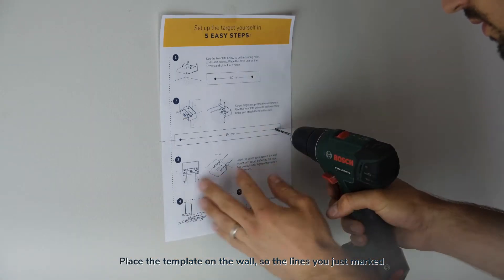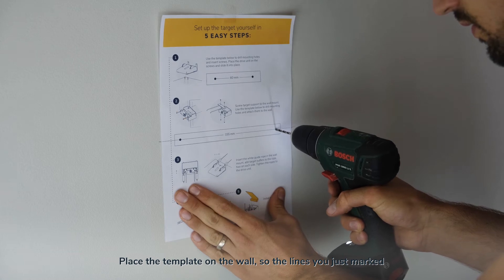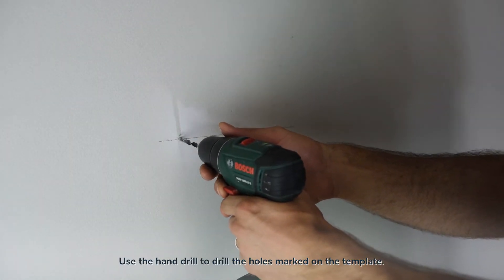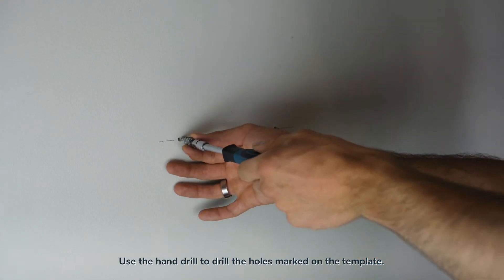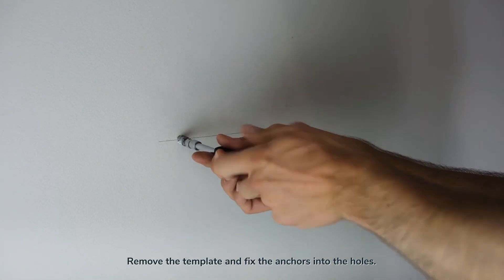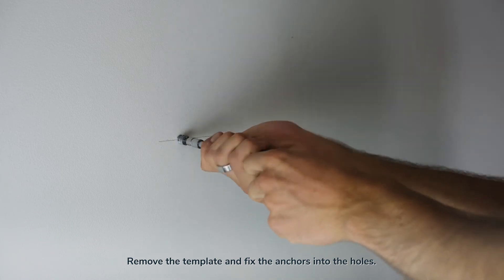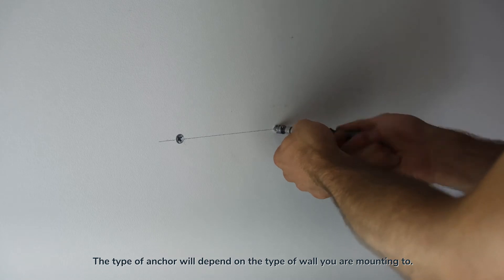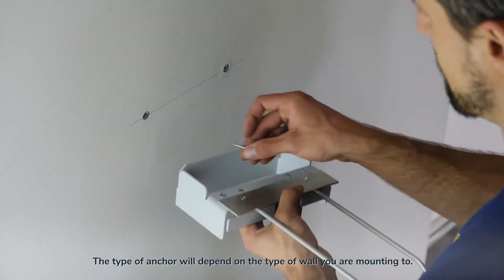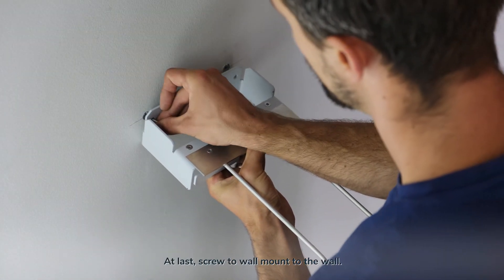Place the template on the wall so the lines you just marked match with the drilling template's lines. Use the hand drill to drill the holes marked on the template. Remove the template and fix the anchors into the holes. The type of anchor will depend on the type of wall you are mounting to. At last, screw the wall mount to the wall.